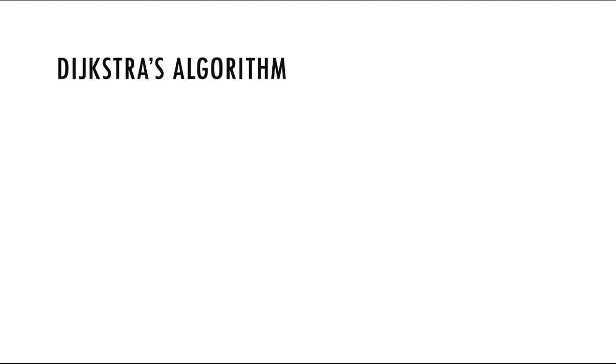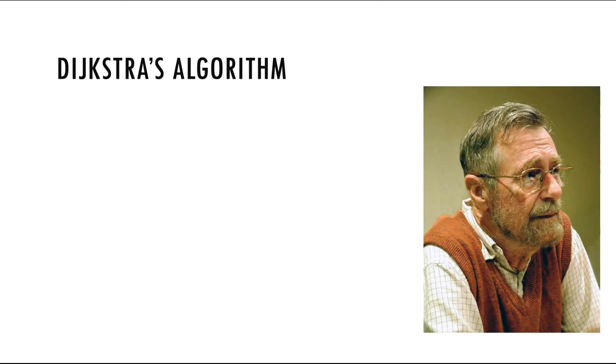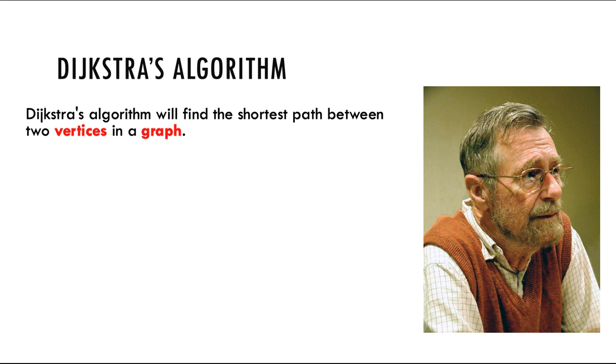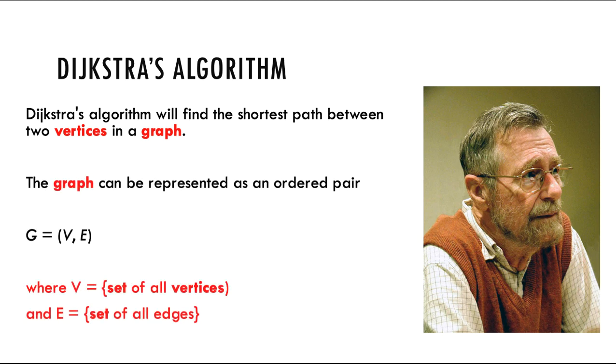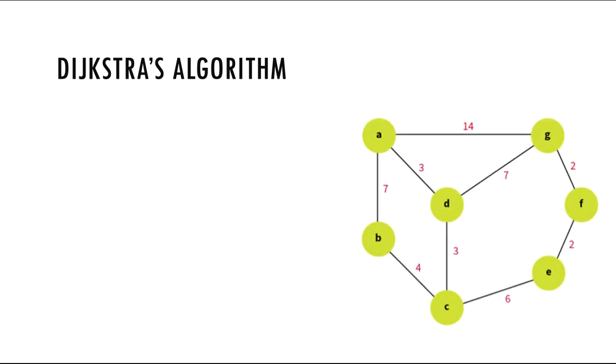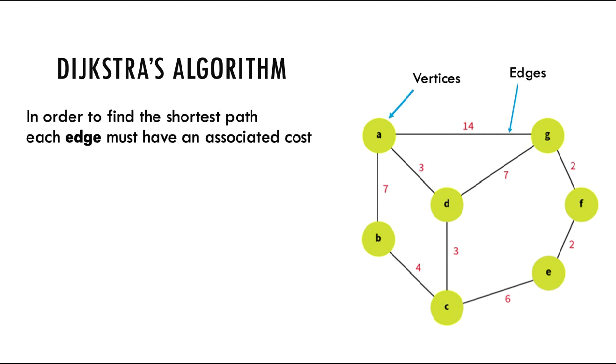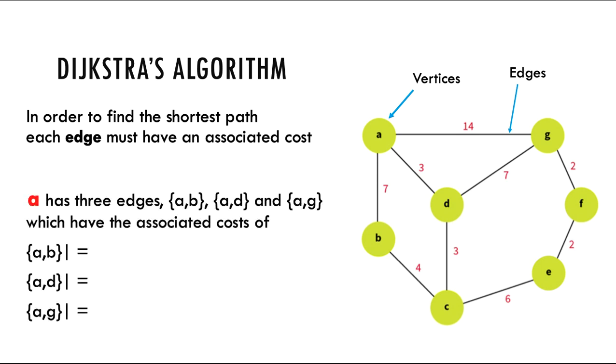So let's have a look at this algorithm then. This is Edgar Dijkstra and he put his name to this algorithm. It will find the shortest path between two vertices in a graph, and the graph could be represented as an ordered pair. The graph consists of all the vertices and all the edges that make up the graph itself. Here is a graph that consists of vertices and edges. In order to find out the shortest path, each edge must have an associated cost.